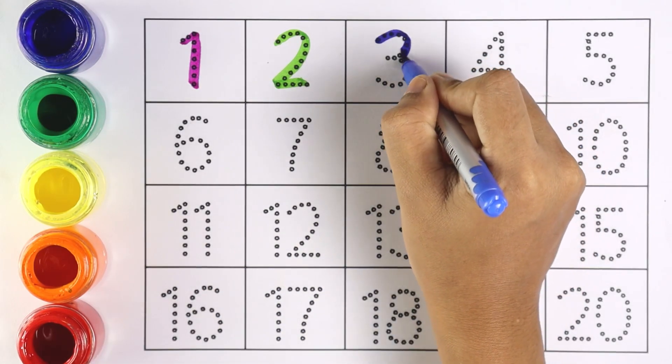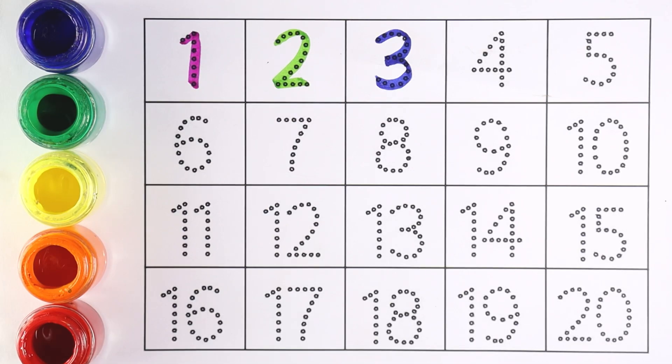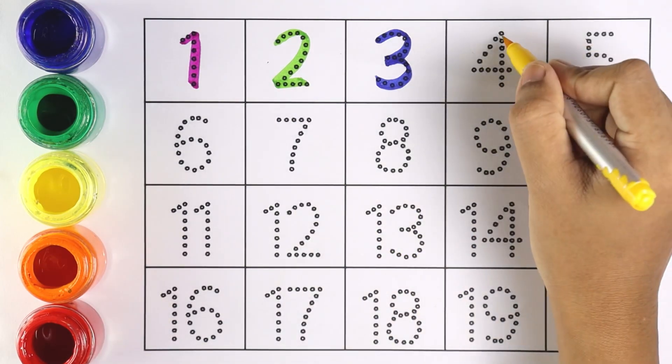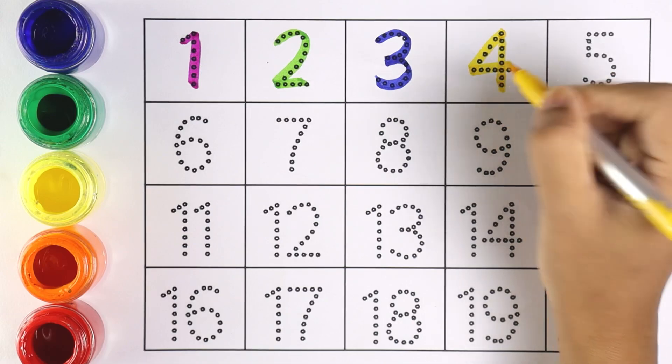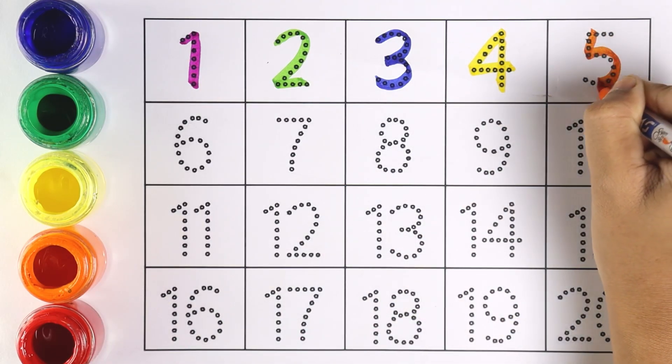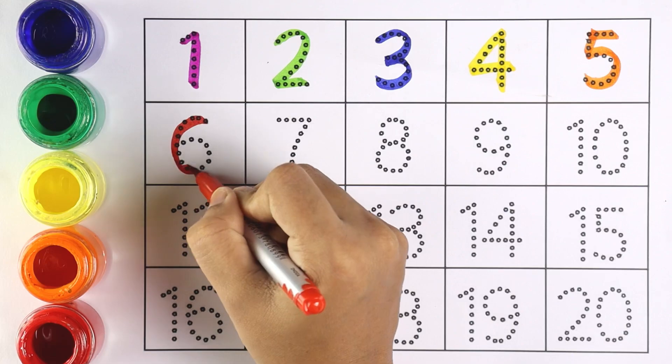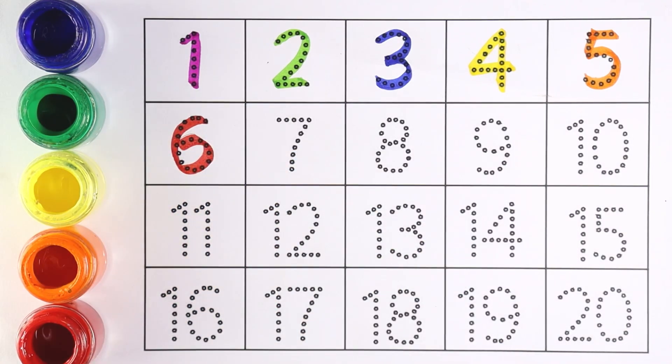Number 3. Number 3. Let's move on to the next number. Number 4. Which number is this kids? Number 4. Now I'm writing number 5. Number 5. Very good.